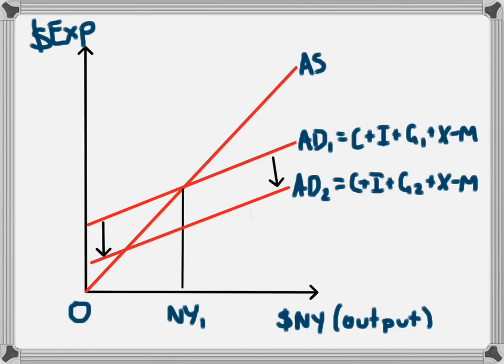Aggregate demand 2 will be equal to C plus I plus G2 plus X minus M. And we know that G2 is less than G1, and the amount by which G2 is less than G1 is this amount here.